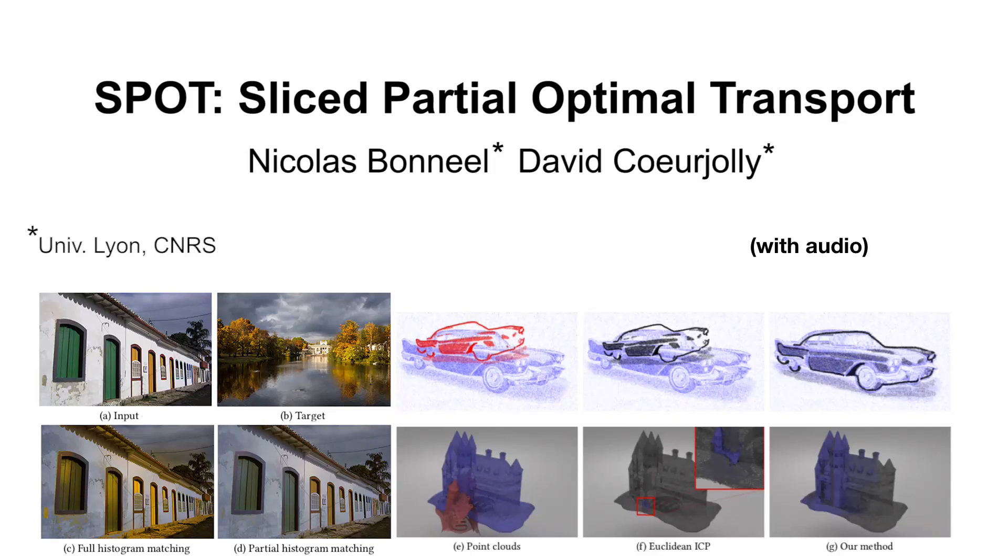Our paper computes sliced optimal transport of point clouds of different cardinalities that relies on a new fast partial linear assignment algorithm in one dimension.